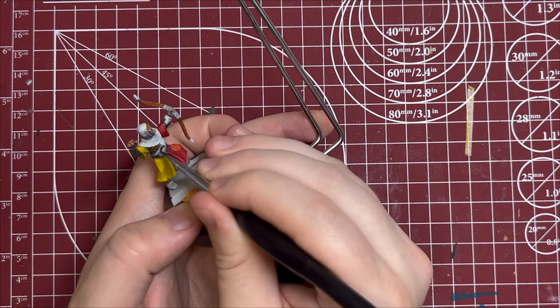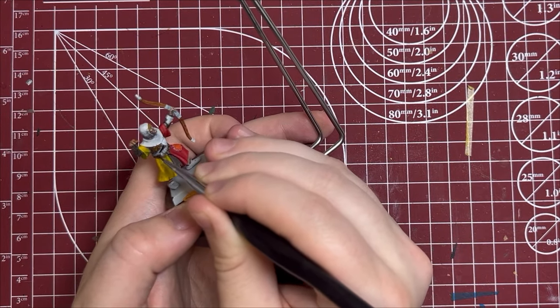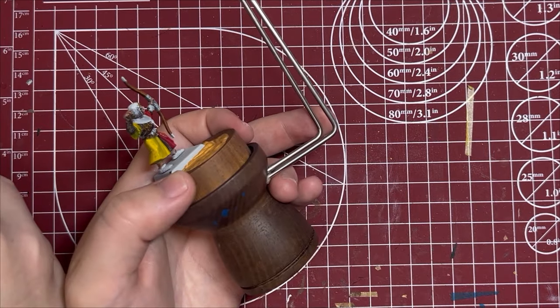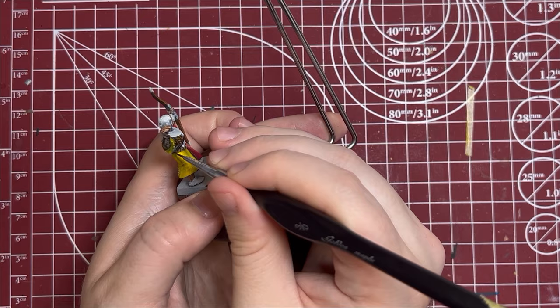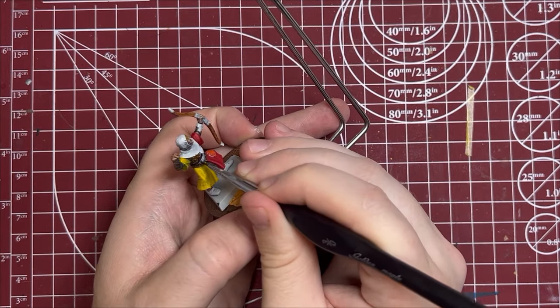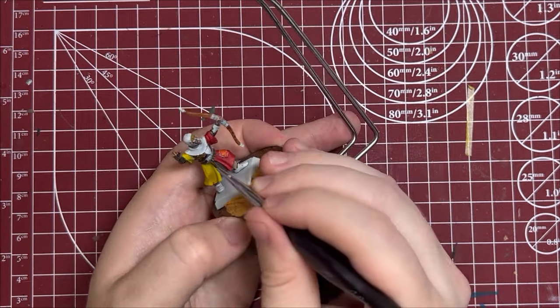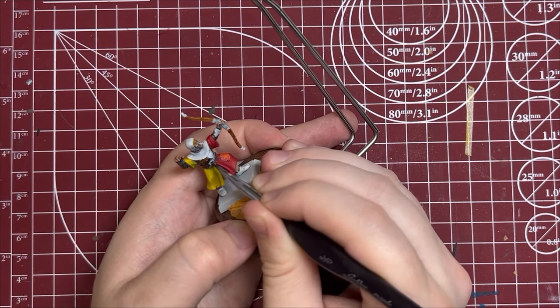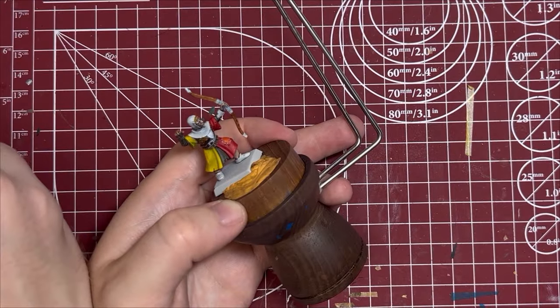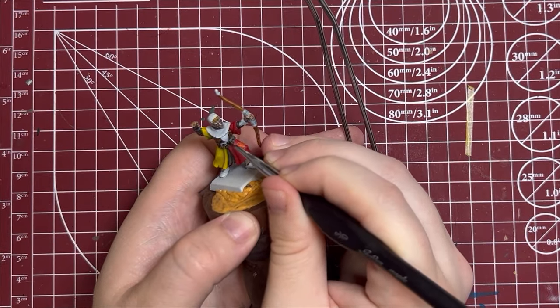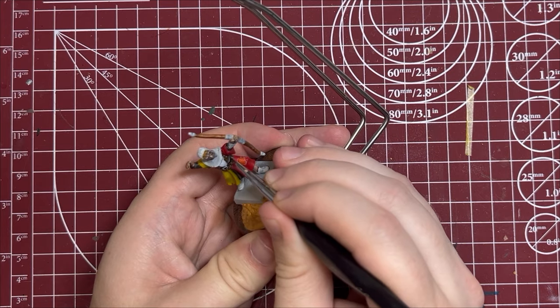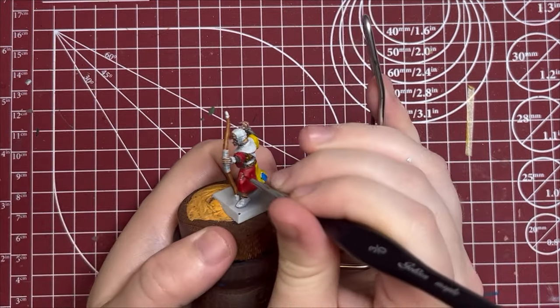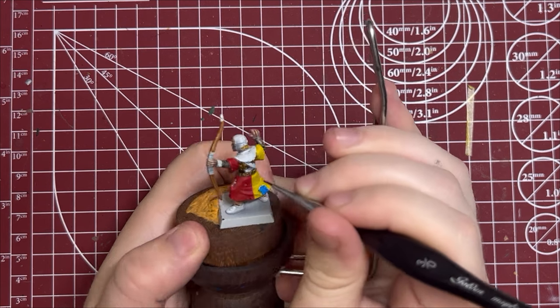And now I am going to paint his belts across his chest. Now I am using Cygor Brown here, which is actually a very dark contrast brown. Most of the times when I use this, I actually mix this up either with another brown or with a contrast technical medium, excuse me, or mix it with a technical medium to get a lighter color. But I think this dark brown works for belts and straps, and so I'm just going to leave it.